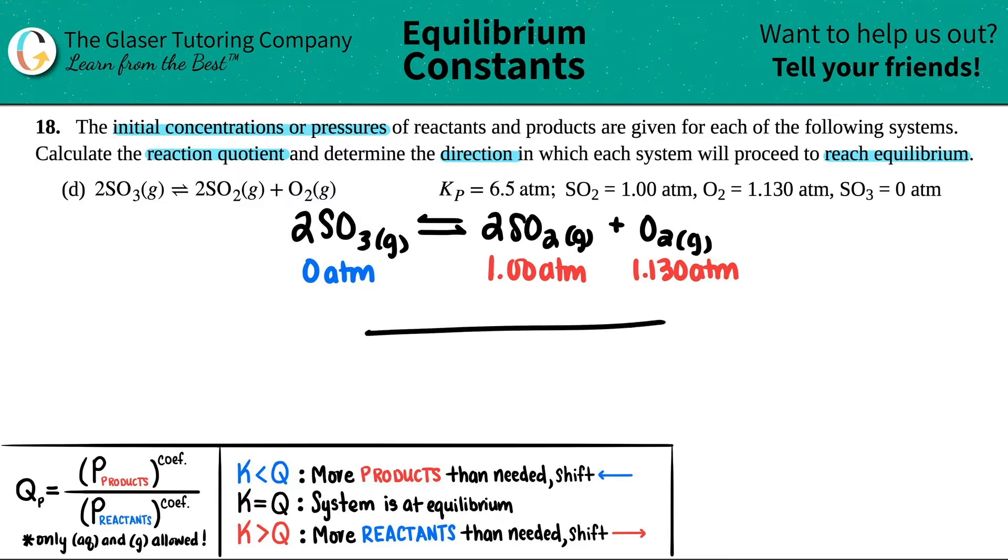the equation, you have to go towards that side. So we already answered the second part of the question - determine the direction. You're going to shift, or proceed, or whatever word you want to use, to the left. You're going to go the reverse reaction.